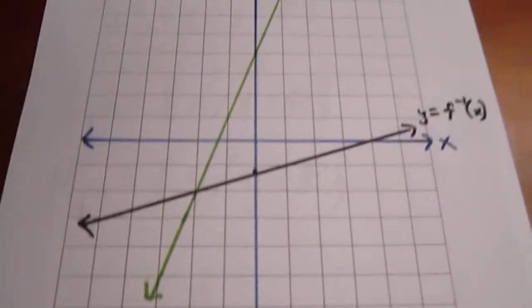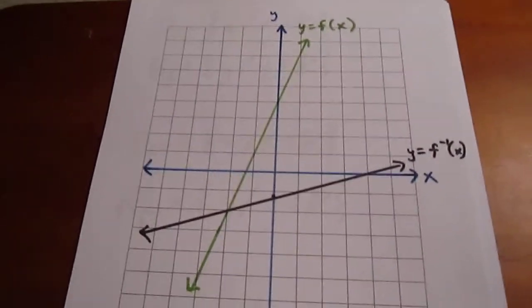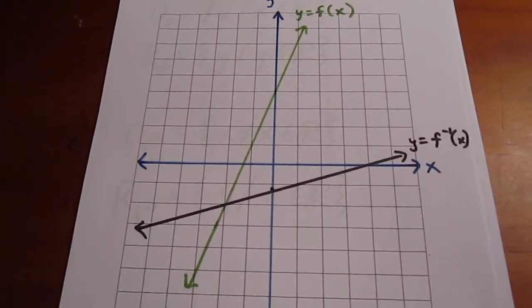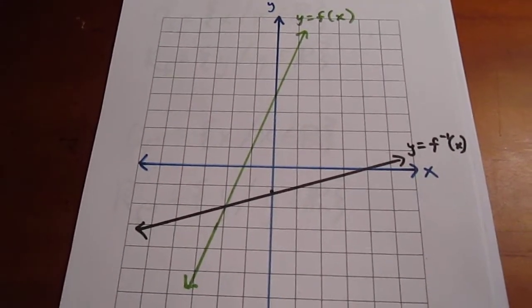We then can graph both of those functions. They're straight lines, we only need two points on each, or the slope and the y-intercept of each.